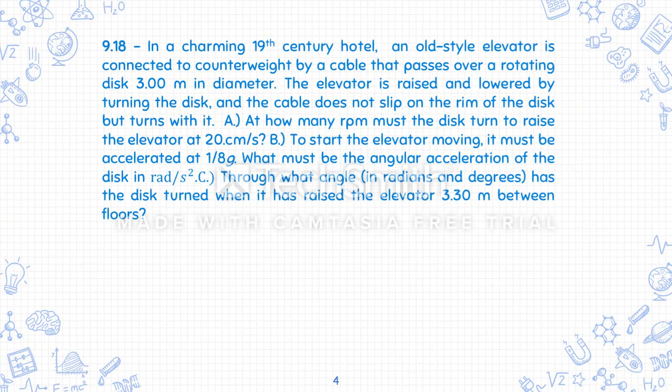Next problem. In a charming 19th-century hotel, an old-style elevator is connected to a counterweight by a cable that passes over a rotating disc, 3 meters in diameter. The elevator is raised and lowered by turning the disc, and the cable does not slip on the rim. At how many RPM must the disc turn to raise the elevator at 20 centimeters per second? To start the elevator moving, it must be accelerated at 1/8 of gravity. What must be the angular acceleration of the disc in rad/s²? Through what angle in radians and degrees has the disc turned when it has raised the elevator 3.30 meters between floors?